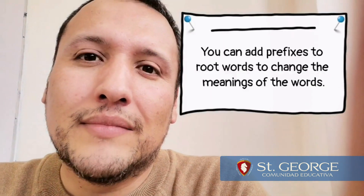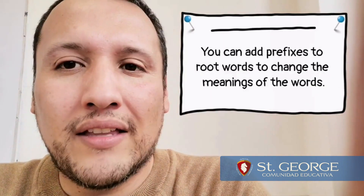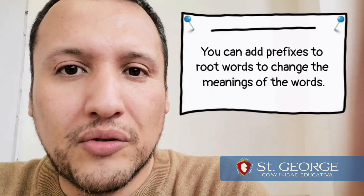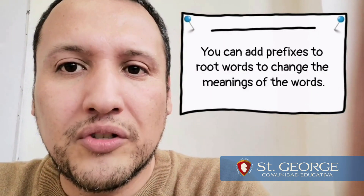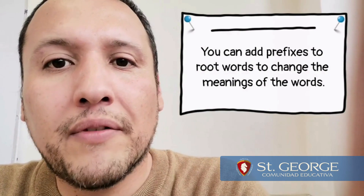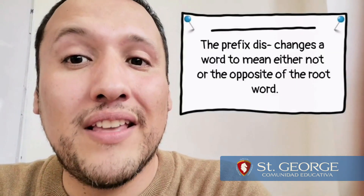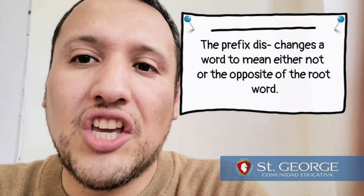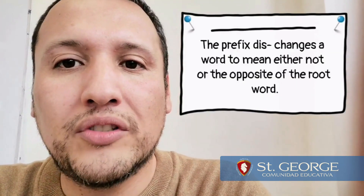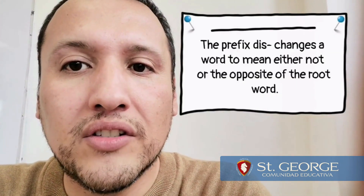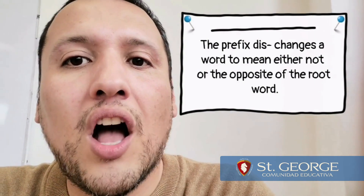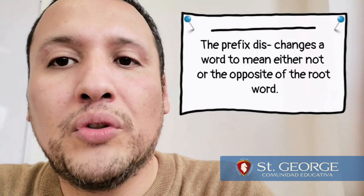Know the rule. You can add prefixes to root words to change the meaning of a word. The prefix 'dis' changes a word to mean either 'not' or the opposite of the root word.